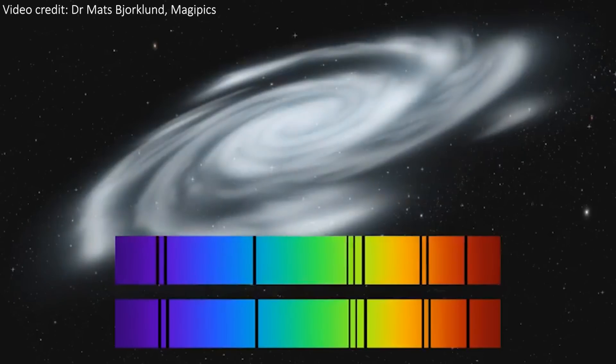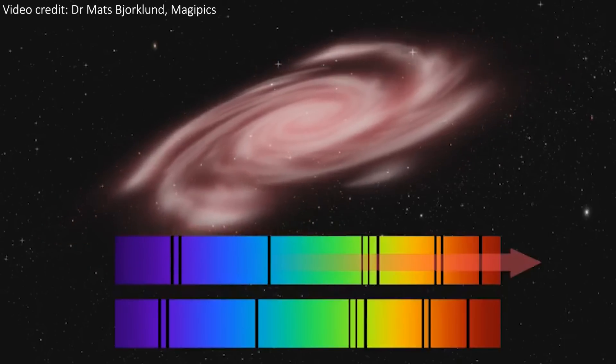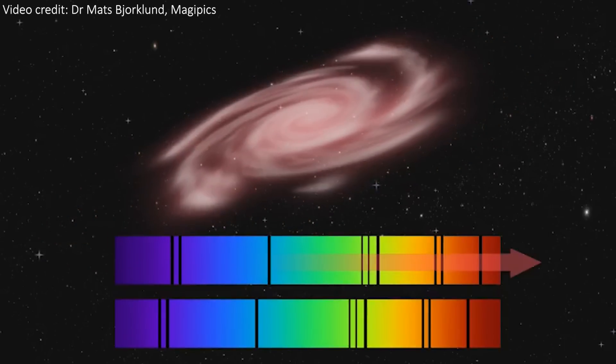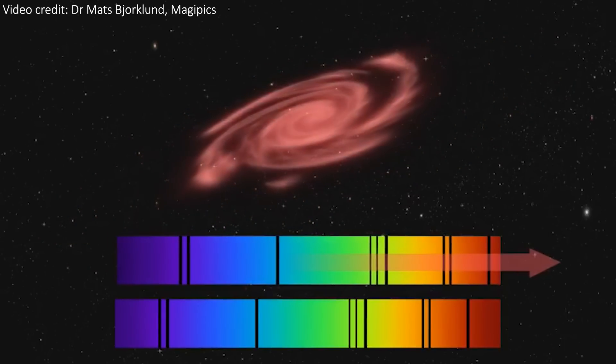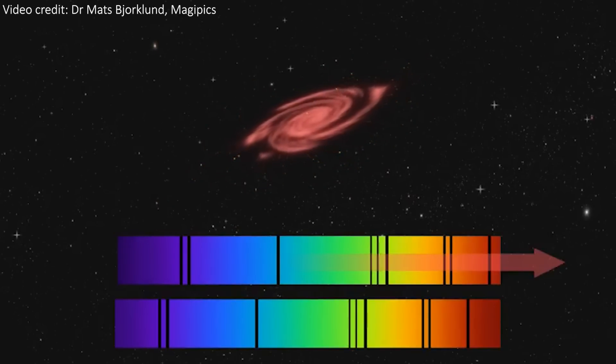So, the lines will always be emitted at the same wavelength. But over time, the wavelength gets longer as it travels through the universe, stretched by the expansion. The further away the galaxy is, the longer the light travels for, and the more it gets stretched as a result. So, the further to the right the lines are here, the more distant the galaxy is, and the higher the redshift.